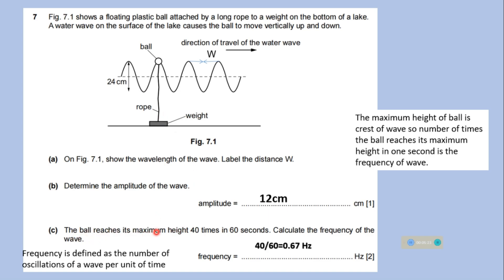The ball reaches its maximum height 40 times in 60 seconds. Calculate the frequency of the wave. We know that frequency is defined as the number of oscillations of a wave per unit of time. Since the maximum height of ball is crest of wave, number of times the ball reaches its maximum height in one second is the frequency of wave here. So frequency is equal to 40 divided by 60, it is 0.67 hertz.